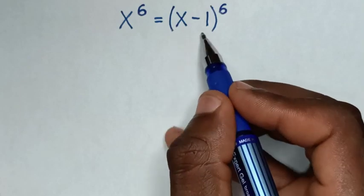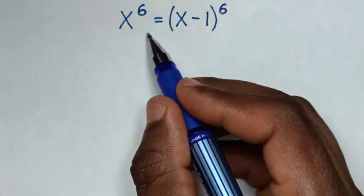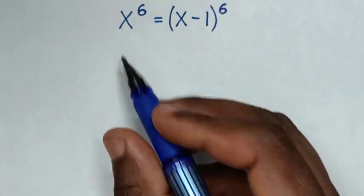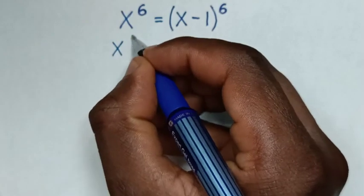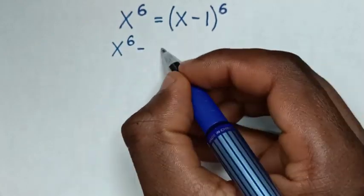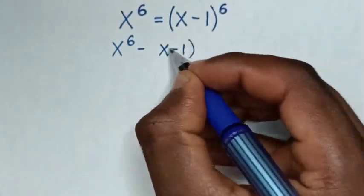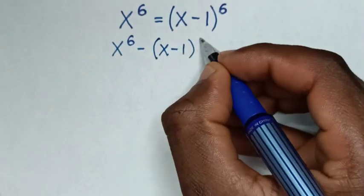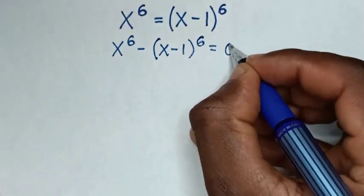First, we take (x minus 1) to the power of 6 to the left side. So it will be x to the power of 6 minus (x minus 1) to the power of 6, equal to 0.